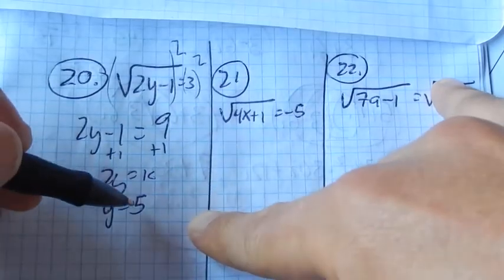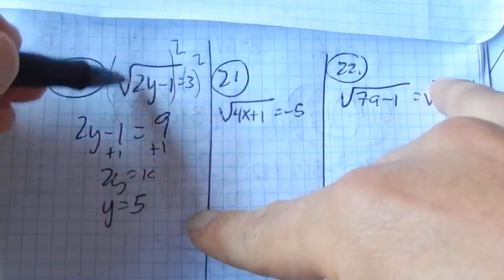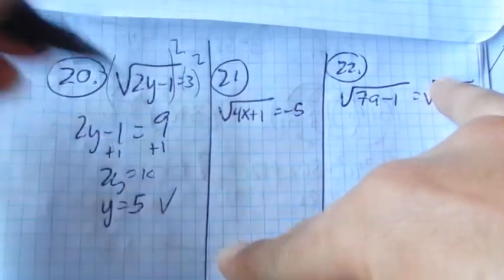I'm going to plug it back in to check it, make sure it works. 2 times 5 is 10, 10 minus 1 is 9, square root of 9 is 3. Yep, got it.